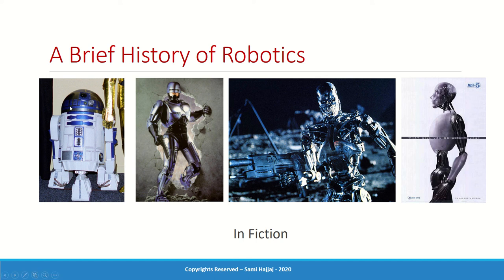By the way, the R2-D2 robot at the time of the movie in the late 70s was actually a popular home device — not really a robot in the way we call it, just something like a garbage tin on wheels that makes sounds. It was really a fun toy. I don't remember it, I was too young, but I remember seeing it still in the 80s growing up.